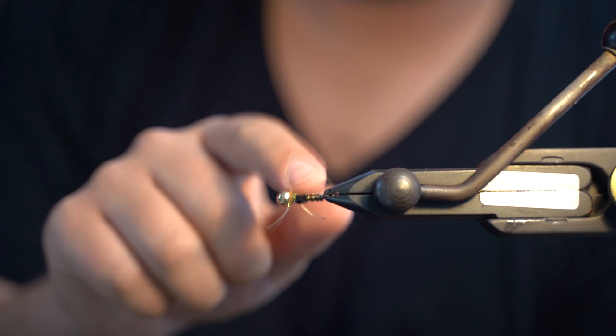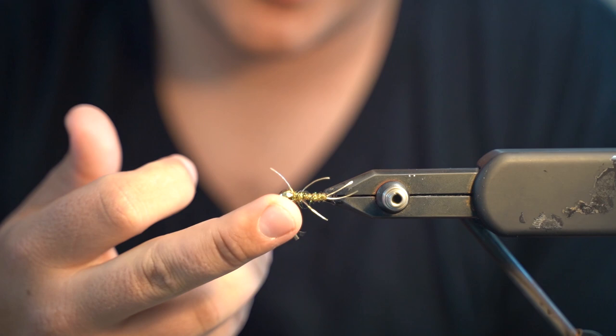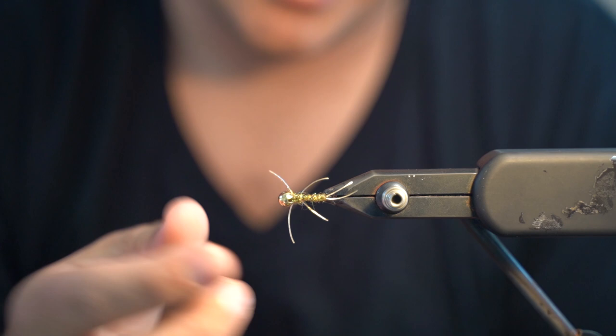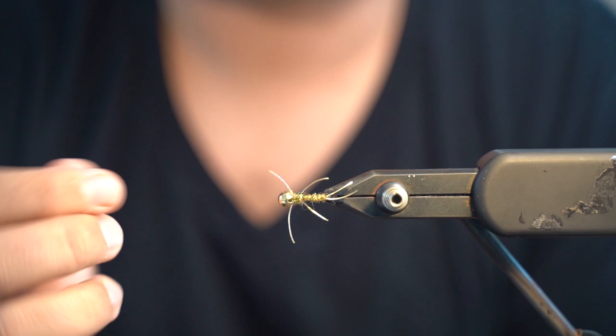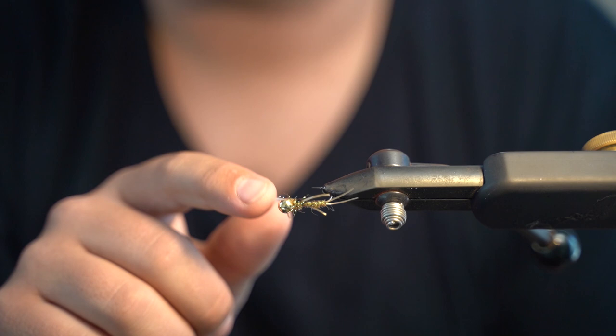This is a pretty good just all-around stonefly pattern, whether it's a golden stone. You can change the colors of this - if you want to make it look like a salmon fly, you would use a little bit larger hook, obviously a little bit longer, and you could tie this with a black, maybe mix in a little bit of orange dubbing on the bottom. If you have some olive stoneflies or small olive stoneflies or winter stones, you know, you name the species - all of those you can just vary this exact thing.